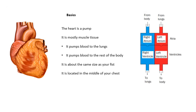Then you have the ventricles at the bottom. Blood comes in from the body into the right atrium and goes through a valve into the right ventricle. From there it's pumped to the lungs, and blood returning from the lungs goes through a valve into the left ventricle, from which it's pumped to the body through the aorta. So those are your atria and ventricles.